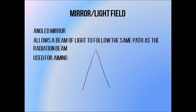Underneath the monitor chamber is a very thin angled mirror. We shine a light onto it from the side, which allows us to produce a beam of visible light that follows the same path as the radiation beam. Because we can't actually see the radiation and you don't want to be in the room when it's on, we use this light field instead to see where the radiation is going to hit the patient so we can point it at the right spot.